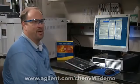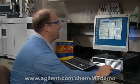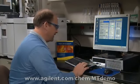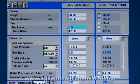Sure. Let's say I'm going to buy a new column. I have a 30 meter, 0.25, and for fun, let's make it a 0.5 micron film. And I want to go to one of those new high-efficiency columns, the 20 meter, 0.18.